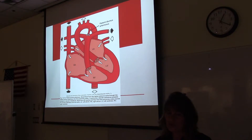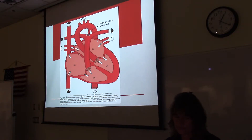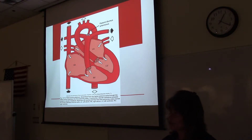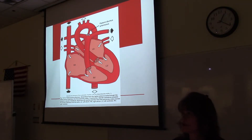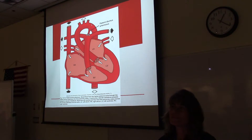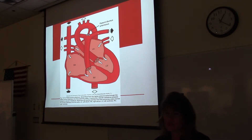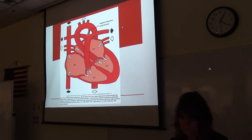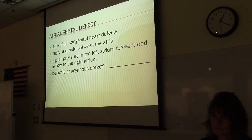If pulmonary hypertension or PPHN is mentioned, blood flows right to left — from the pulmonary artery into the aorta. So for a pure PDA, think left to right: aorta to pulmonary artery. If there's pulmonary hypertension, it reverses to right to left: pulmonary artery to aorta. That's it for PDA.